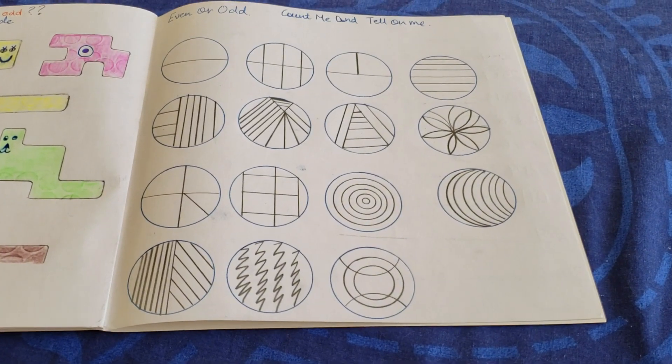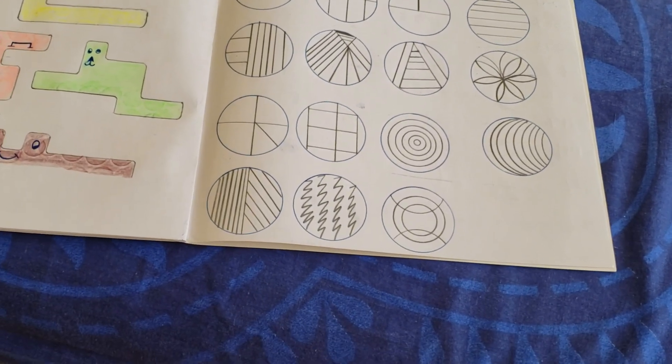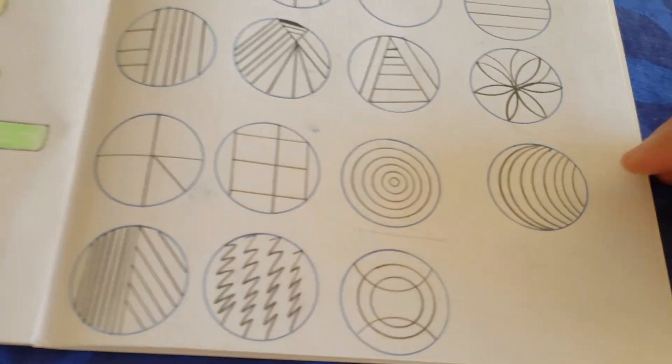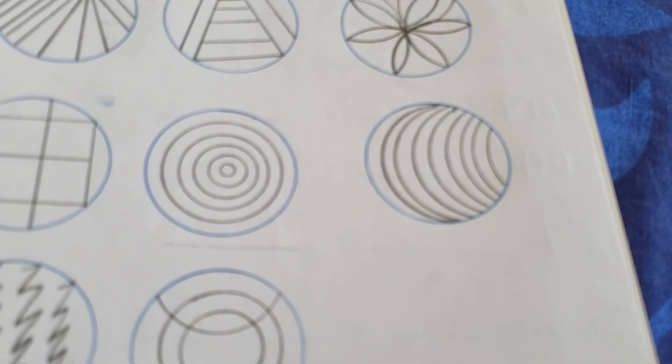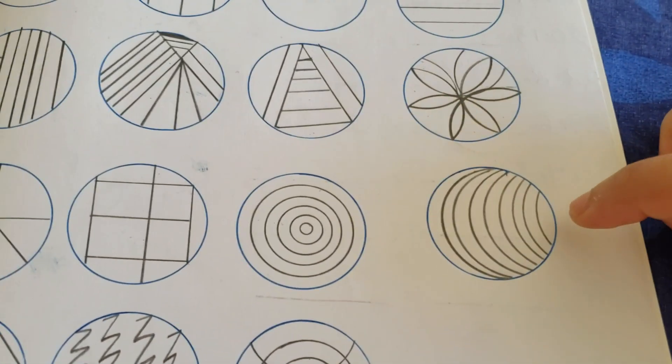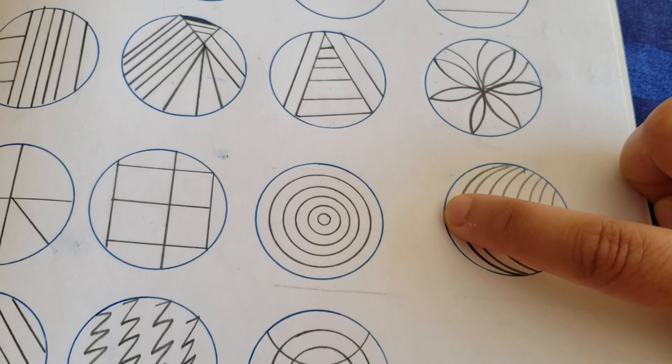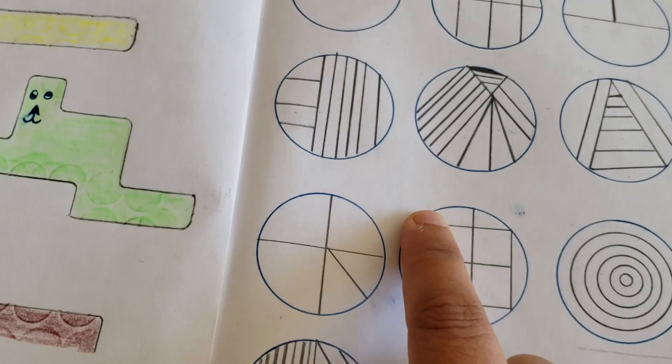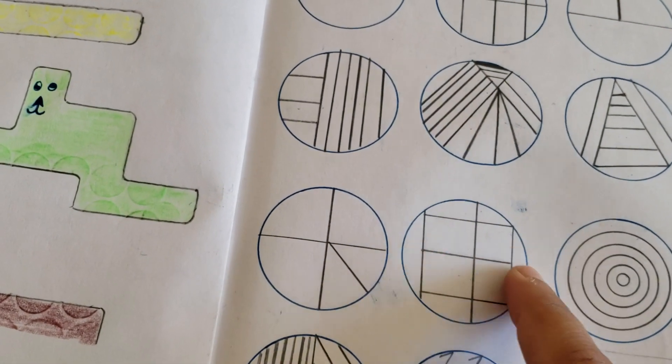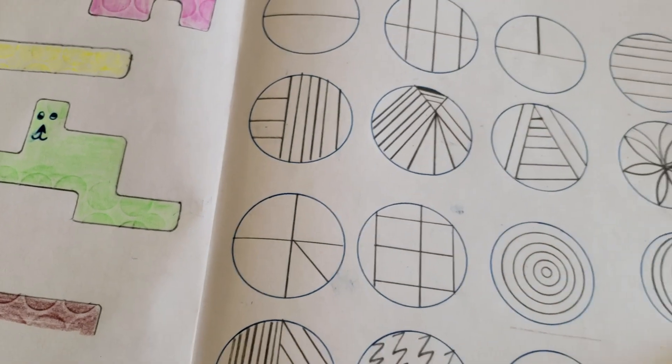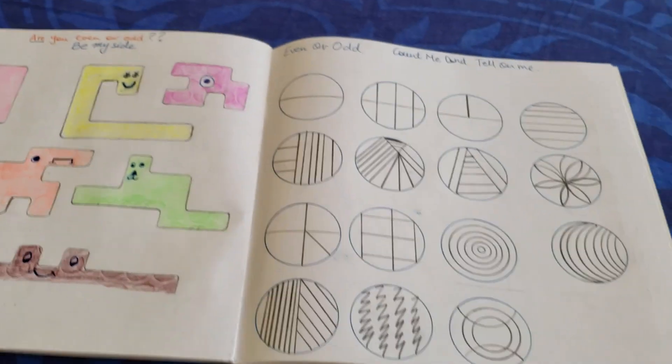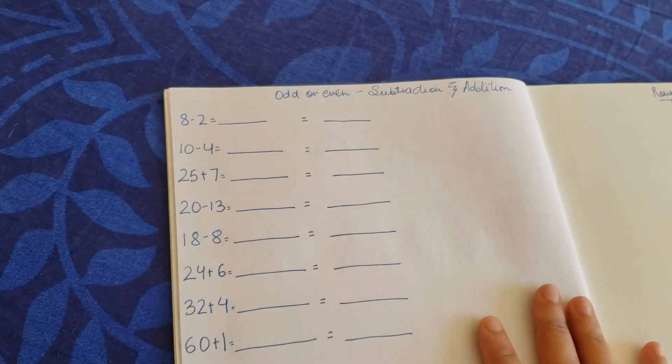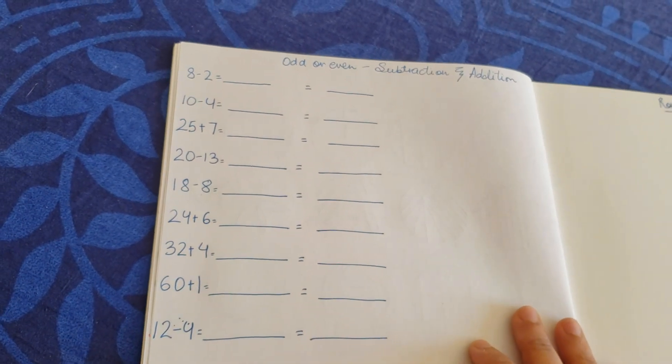Even or odd, count me and tell on me. You can see in one circle I have used many various lines and shapes. He needs to primarily count. One, two, three, four, five, six, seven, eight, nine. It's an even number. He needs to count and then write an E here. So let's see this one. One, two, three, four, five, six, seven, eight, nine, ten. That's a, oh sorry, that was an odd number. That's an even number. I'm so sorry, I got confused. So primarily like this, you have all these shapes and you have to tell them whether it's odd and even.